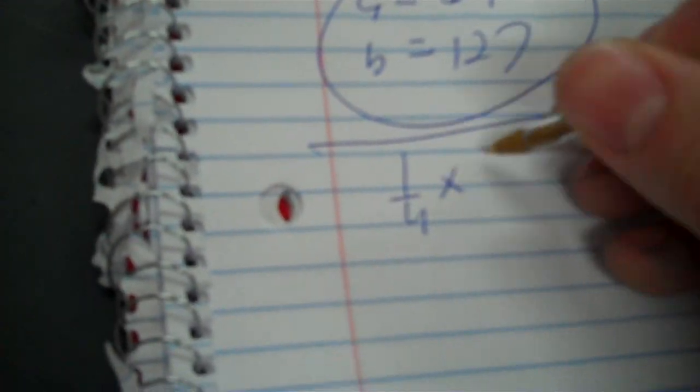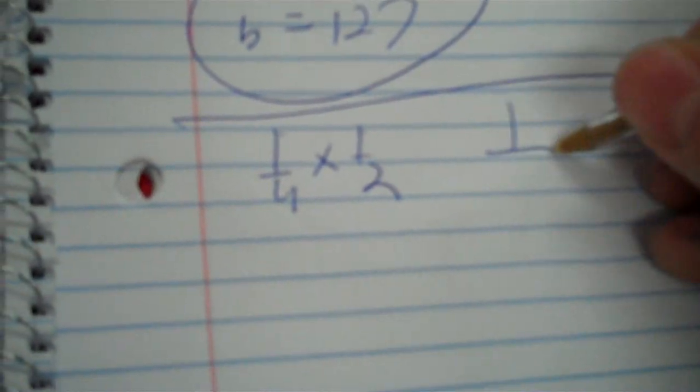Now we get into multiplying fractions. You can use a calculator. Now, if I didn't have the luxury of a fraction key on the calculator, you don't have to get the same denominator on multiplying and dividing. That's adding and subtracting. 1 times 1 is 1. 4 times 2 is 8. That's reduced. 1 third times 2 thirds, 2 ninths.